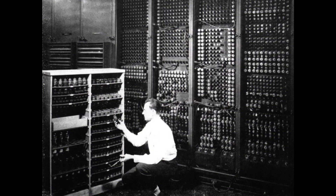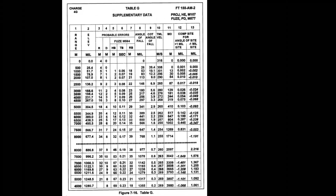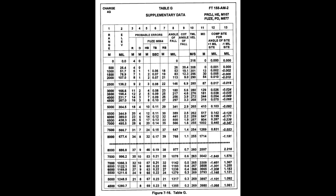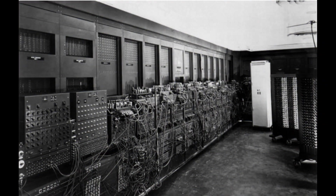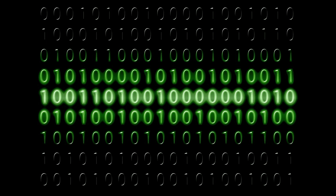The first digital computing machine was invented during this period and was called ENIAC. It was the first programmable computer and was able to solve large numerical problems through reprogramming. ENIAC was mainly used to calculate artillery firing tables for the United States Army's Ballistic Research Laboratory. It was a huge computer, occupying a 50 by 30 foot basement of the Moore School.